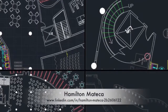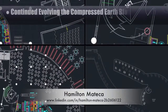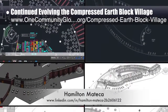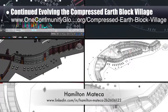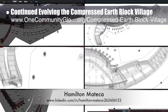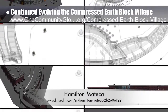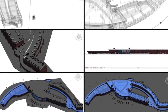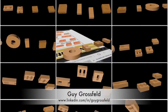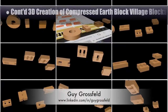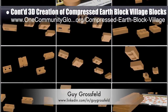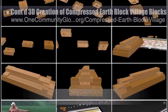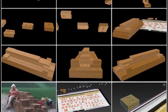Hamilton Matika, AutoCAD and Revit drafter and designer, finished his 11th week helping evolve the compressed EarthBlock Village Pod 4 in AutoCAD and Revit. This week's focus in AutoCAD was finishing the roof and dining area furniture details and final elevator-related revisions. In Revit, the focus was on 3D external details and the internal stairways. Guy Grossfeld, graphic designer, continued 3D creation of the specific blocks for the compressed EarthBlock Village Pod 4, including building the first 3D EarthBlock bench.